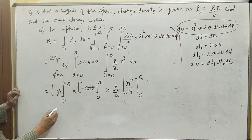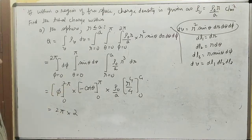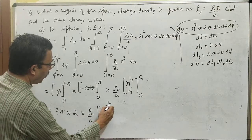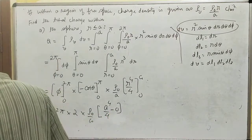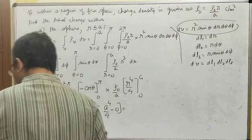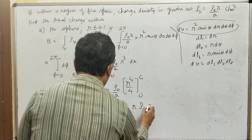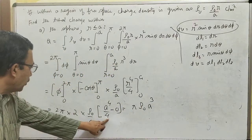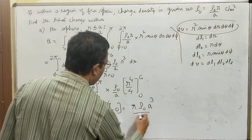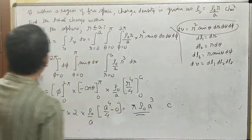Putting in the limits: integrating φ gives 2π; evaluating −cosθ from 0 to π gives −(−1) − (−1) = 2; and (ρ₀/a) · (a⁴/4). Simplifying: 2 × 2 = 4, a⁴/a = a³. The final answer is Q = π ρ₀ a³ coulombs. Please do not forget to write the units — the unit of Q is coulombs.